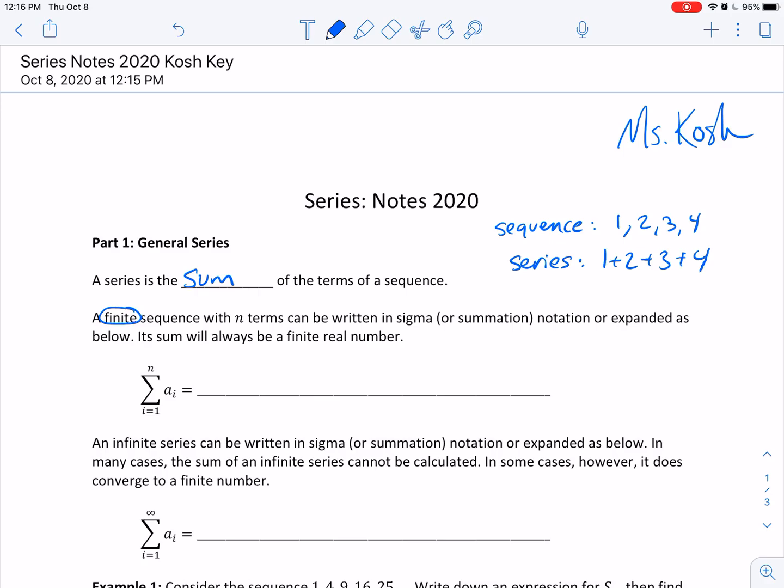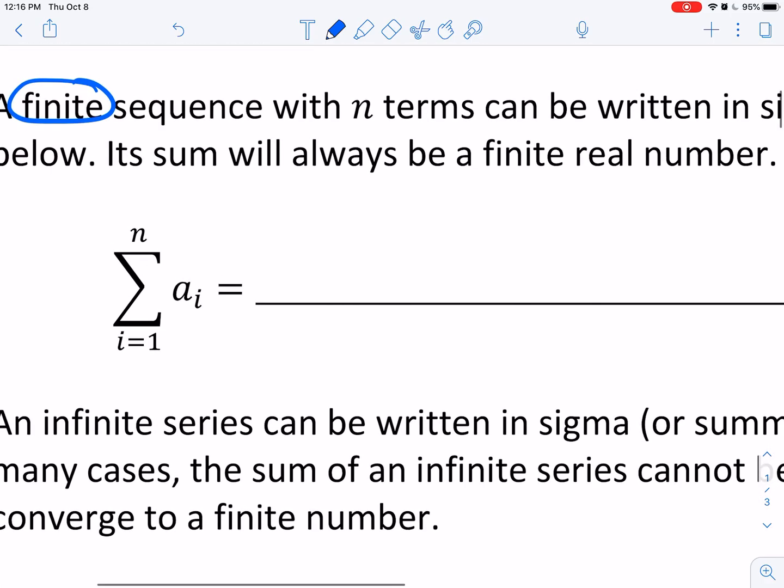This is what this sigma notation right here, that's the Greek letter sigma. This is how I typically will write it. That Greek letter tells us that we're taking the sum of a_i as i goes from 1 to n. So we take out the i, plug in the starting integer, then every integer until we get to n, plug that one in, and then we stop.